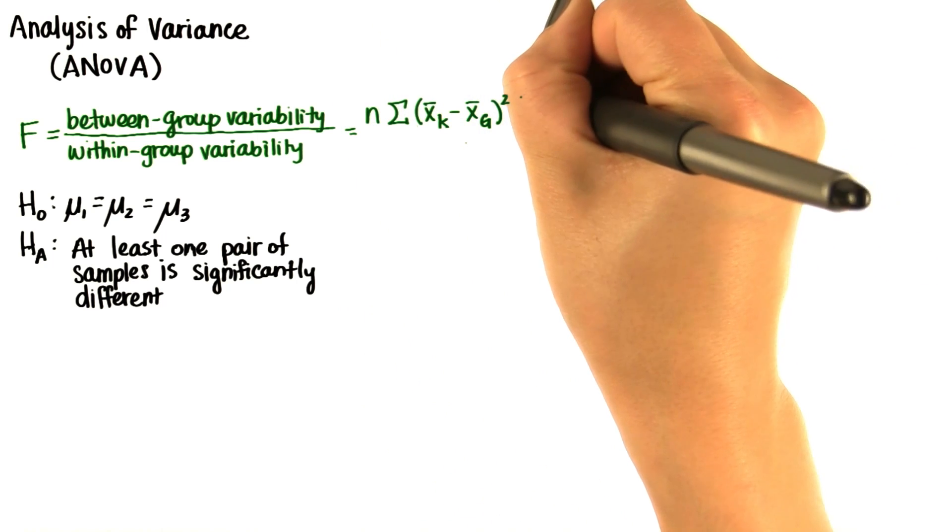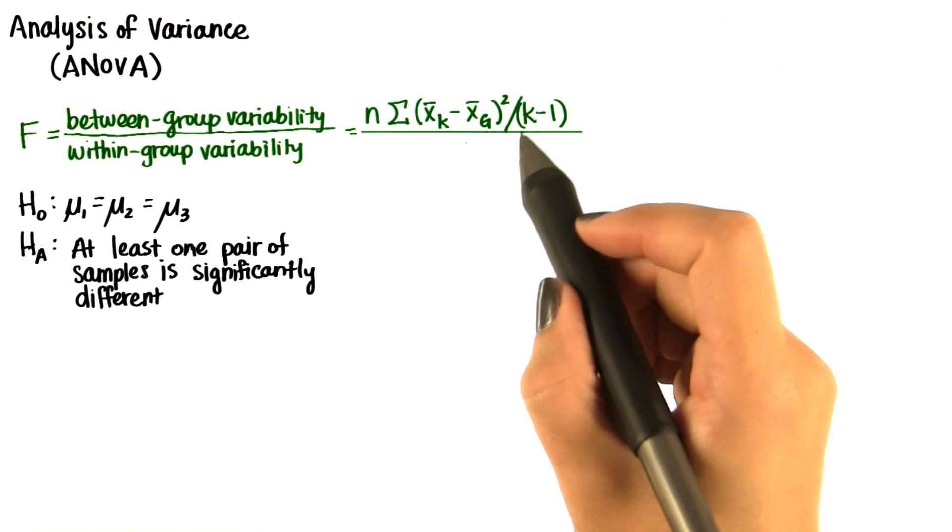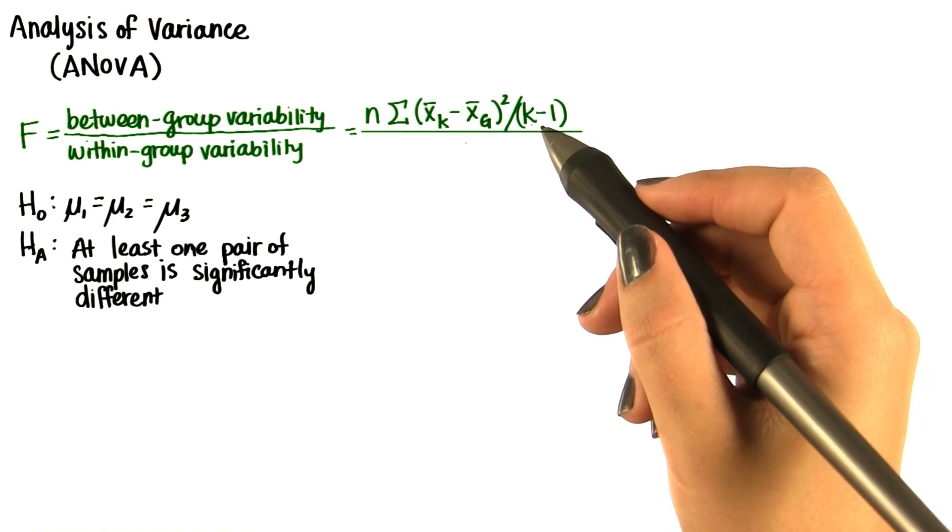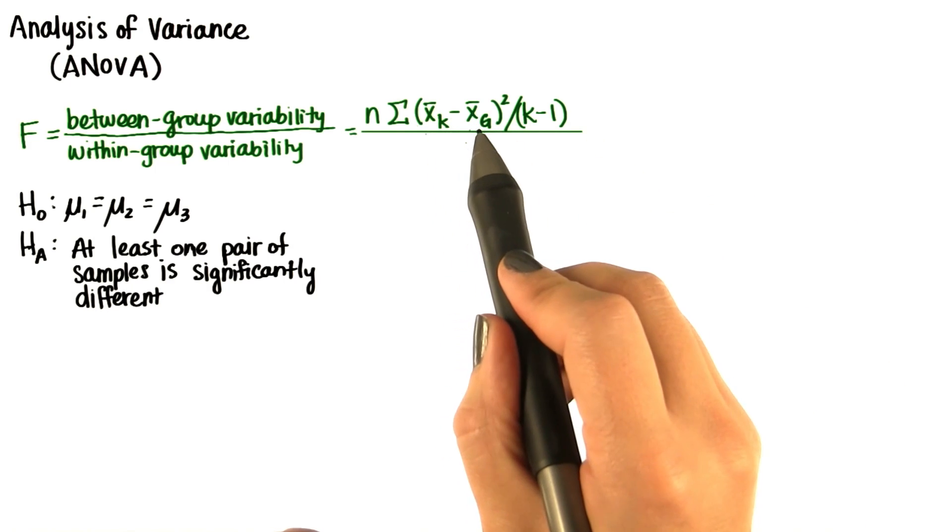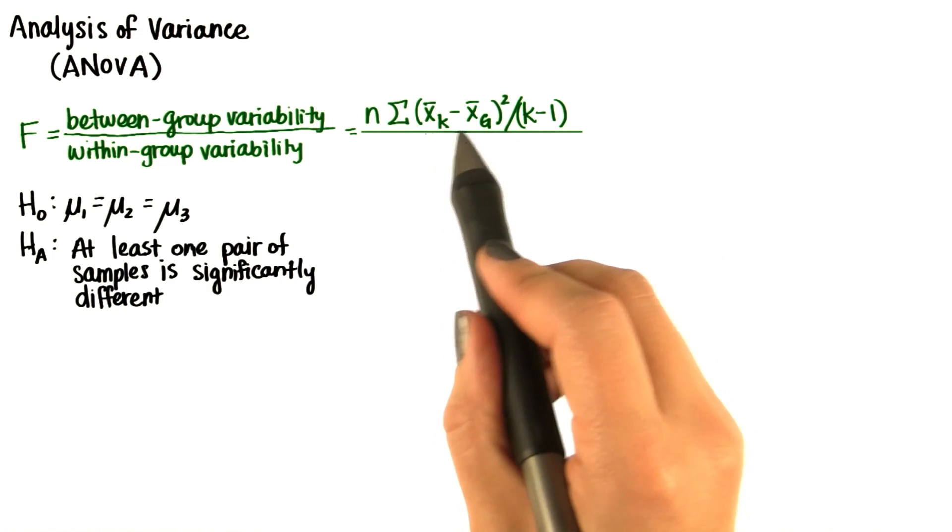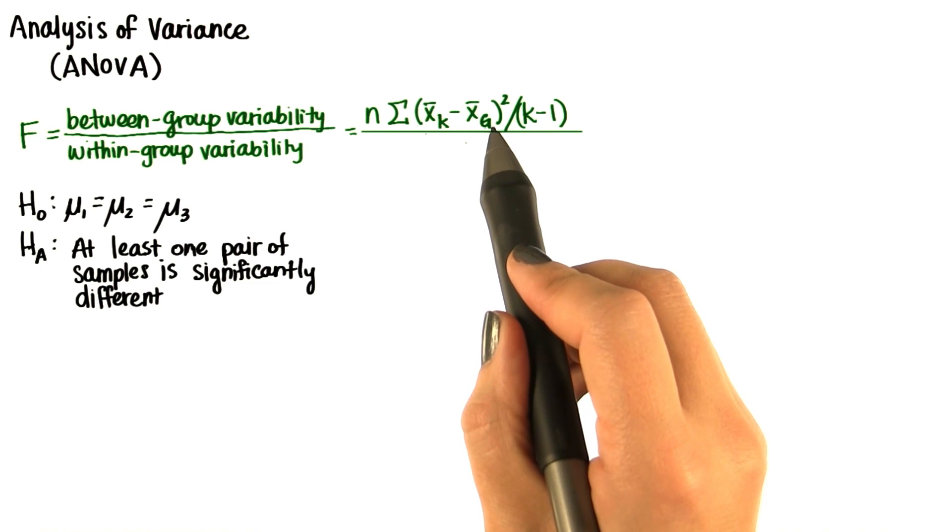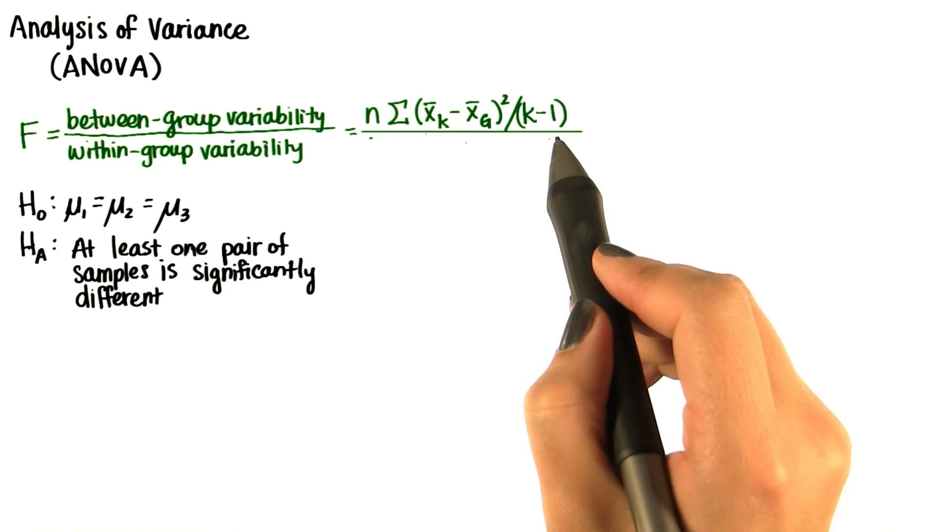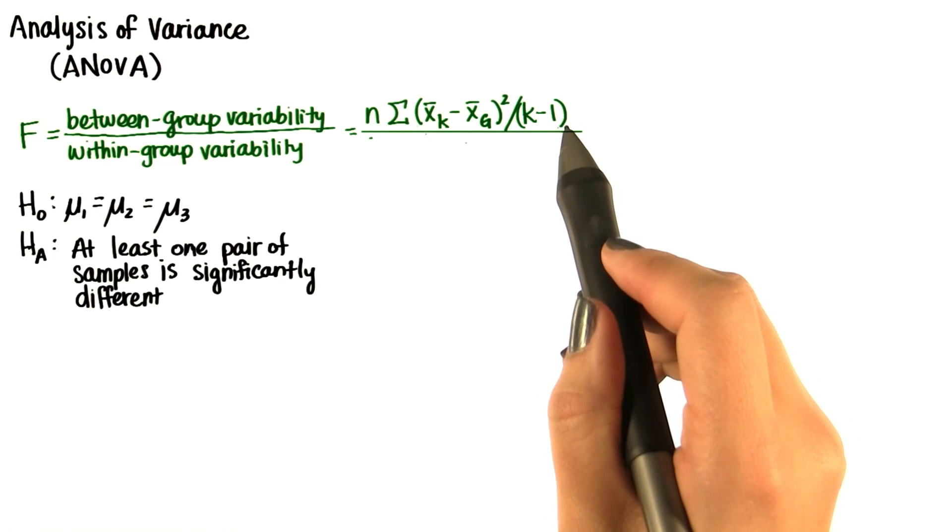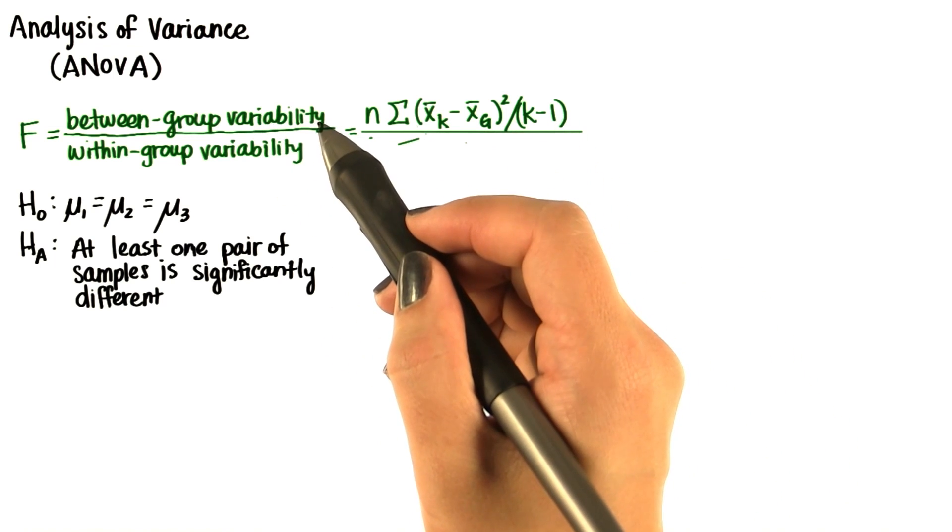And then we divide by the degrees of freedom. When we say formal way of measuring something, that means we get one number. If we add up each square deviation of each sample mean from the grand mean, multiply this by the sample size, and then divide by the degrees of freedom, we get one number that describes between group variability.